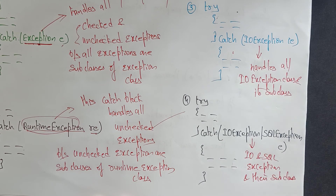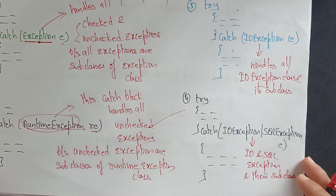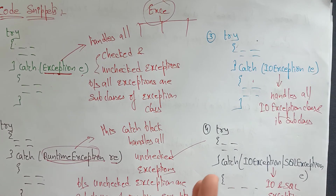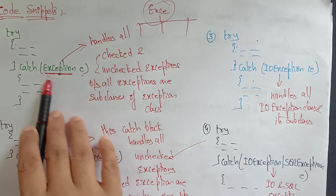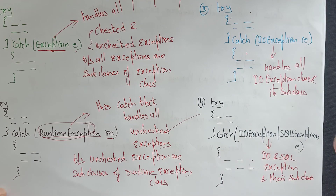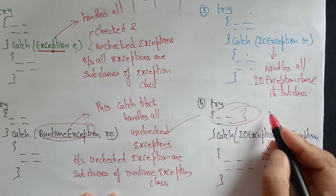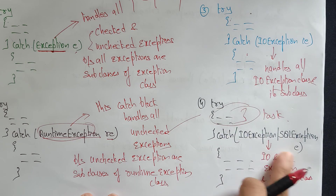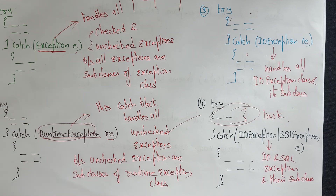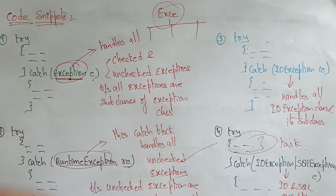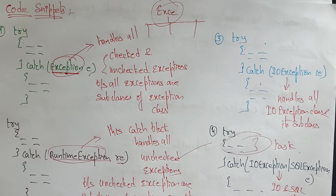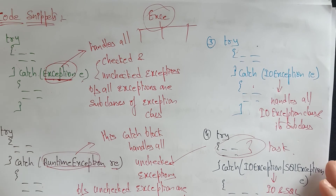If you are trying to access a superclass, it is going to handle the subclasses also. So, based on user requirement: if you are using IO programs, write IOException; if you are writing database queries in the try block, use SQLException. Suppose you don't know what type of exception to use — better go with the superclass Exception, which is going to handle all checked and unchecked exceptions. Thank you.